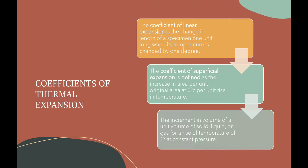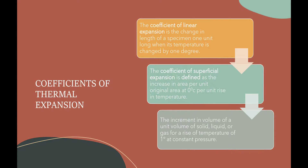Let us now define all three coefficients of expansion. If you have a specimen — a wire, pipe, or rod — of unit length, for example 1 meter, and the temperature is raised by 1 degree Celsius, then the coefficient of linear expansion is defined as the change in length of a specimen 1 unit long when its temperature is changed by 1 degree Celsius. Similarly, the coefficient of superficial expansion is defined as the increase in area per unit original area at 0 degrees Celsius per unit rise in temperature, for a metallic plate or sheet of length and breadth each equal to 1 meter.